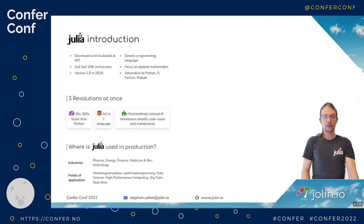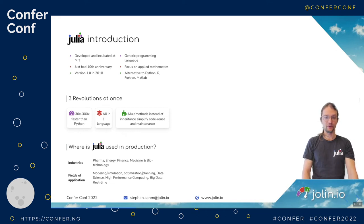Where is Julia used in production? The main fields are pharma, industry, energy, finance, banking, medicine, and biotechnology. In principle it's a generic language so you can use it everywhere, but these are fields where you use a lot of math. Of course academia is also very well suited for Julia. The strongest fields are modeling and simulation, optimization and planning — very widespread in the Julia ecosystem. We also have data science, high-performance computing, and big data real-time.